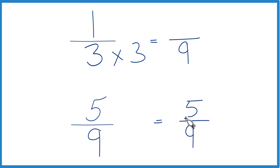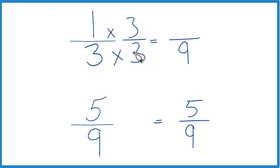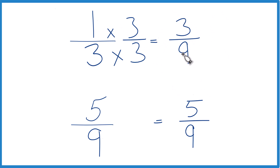On the top, we can't just multiply three by three — we need to multiply the numerator by three as well. That's because three divided by three is one; we're just multiplying by one. We don't change the value, just the way it's represented. So one times three is three, and three-ninths is an equivalent fraction to one-third.